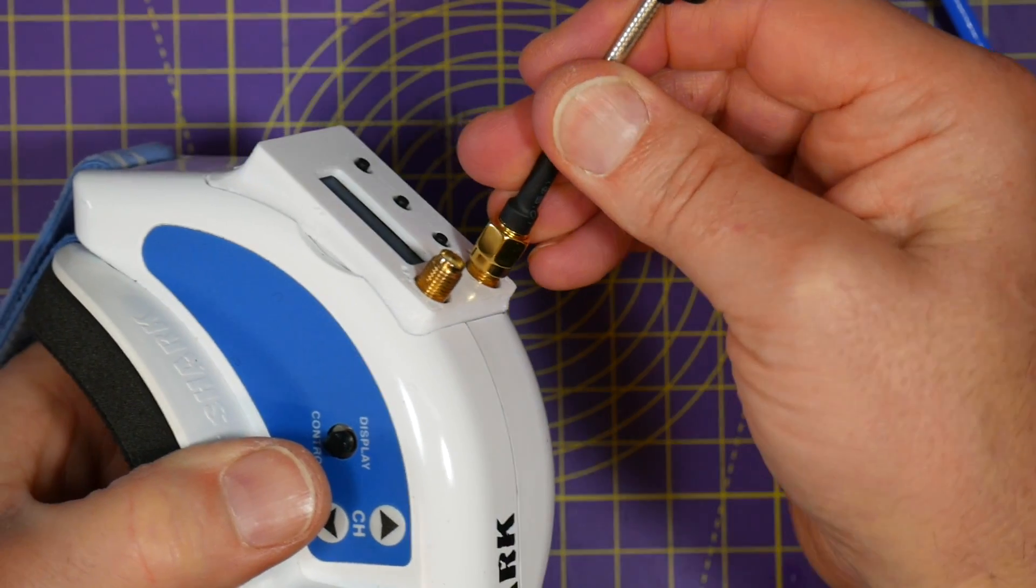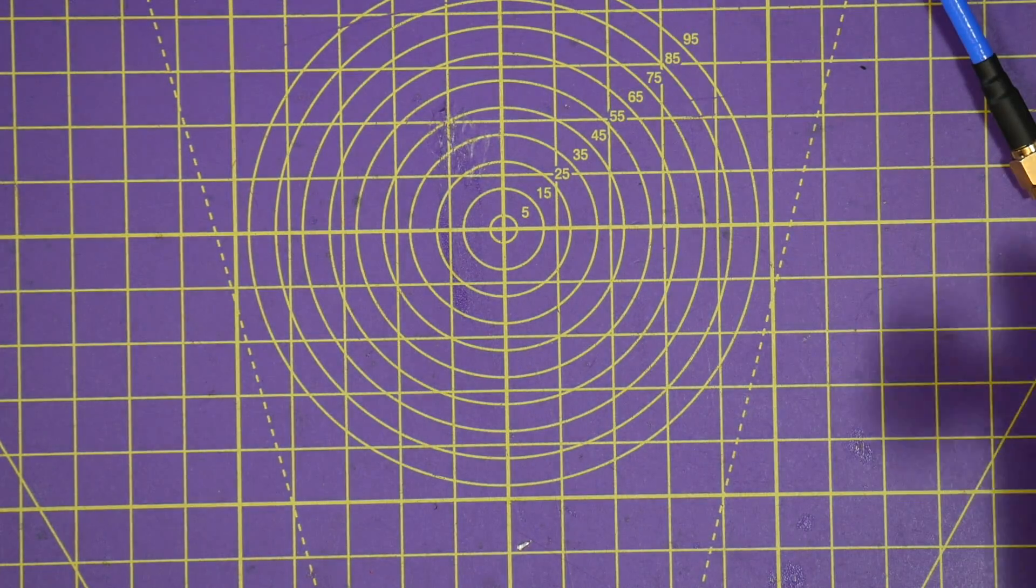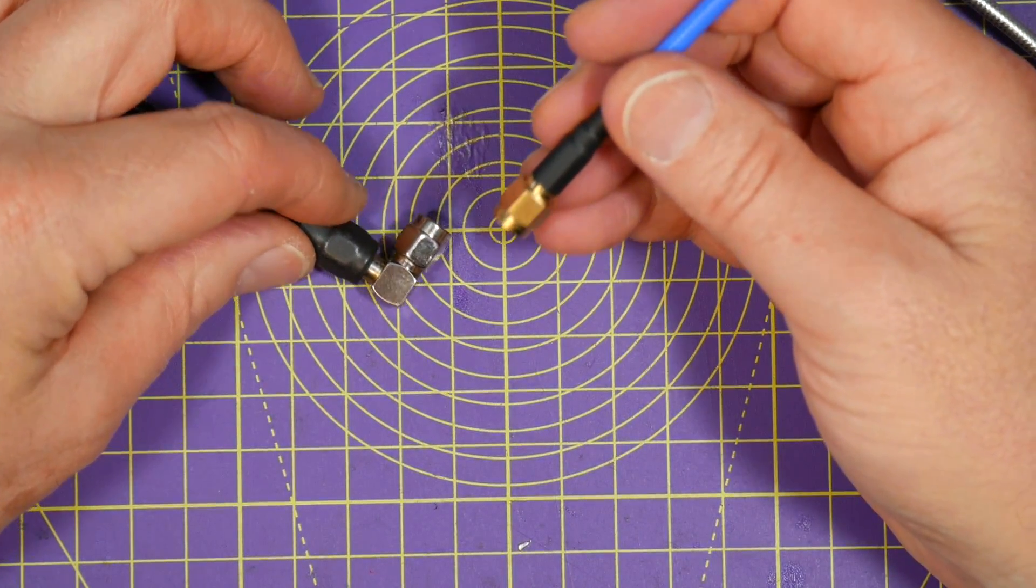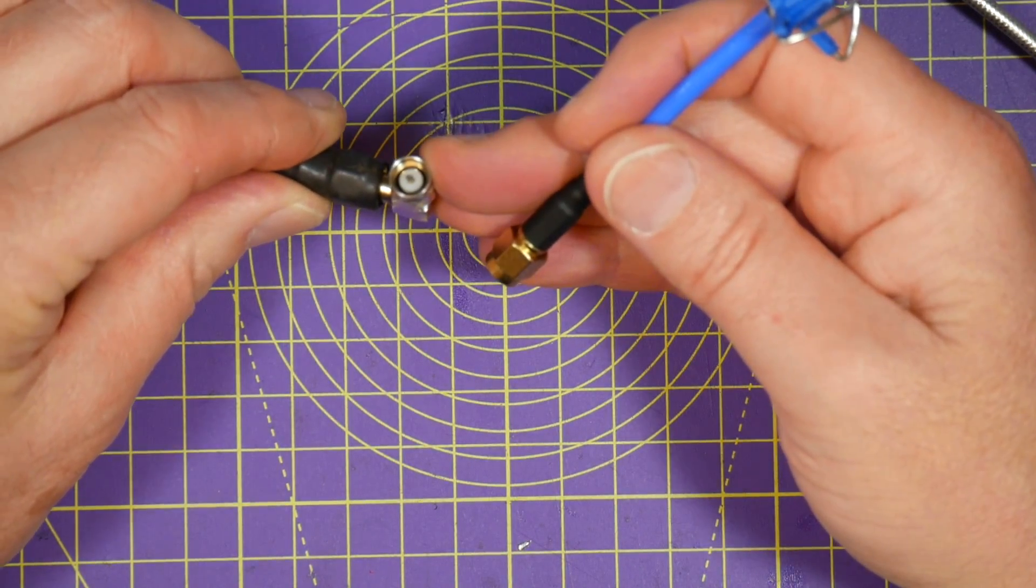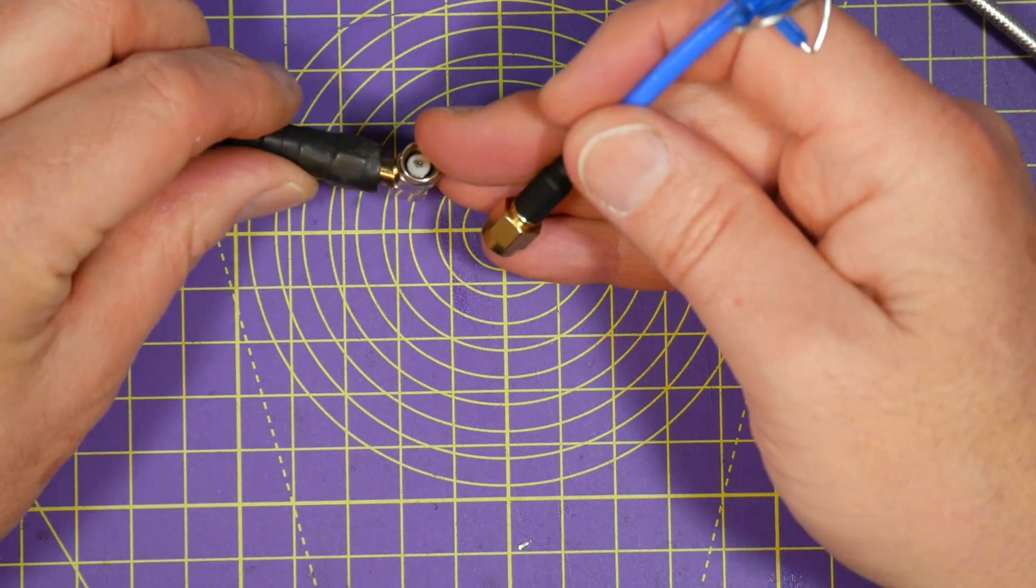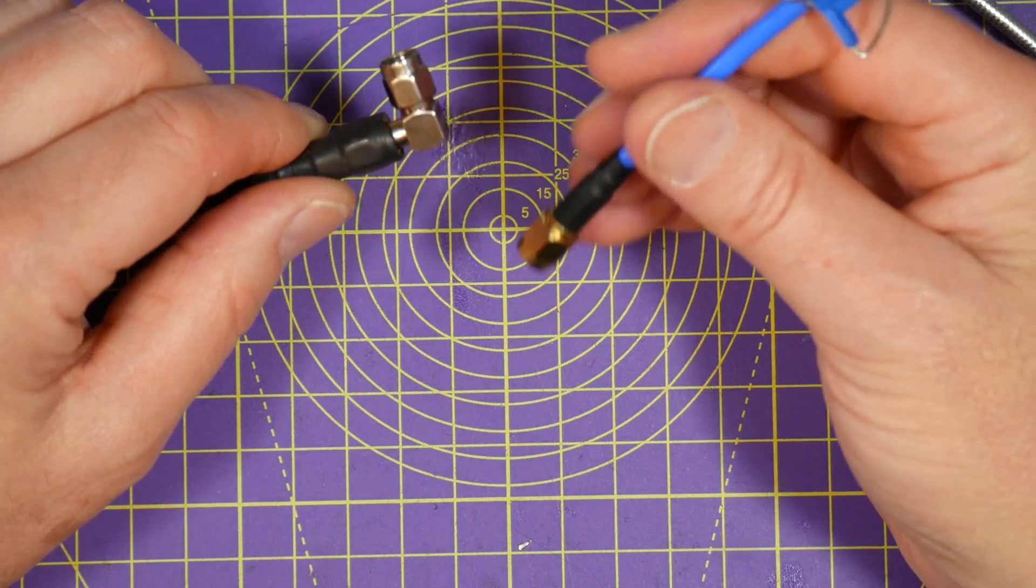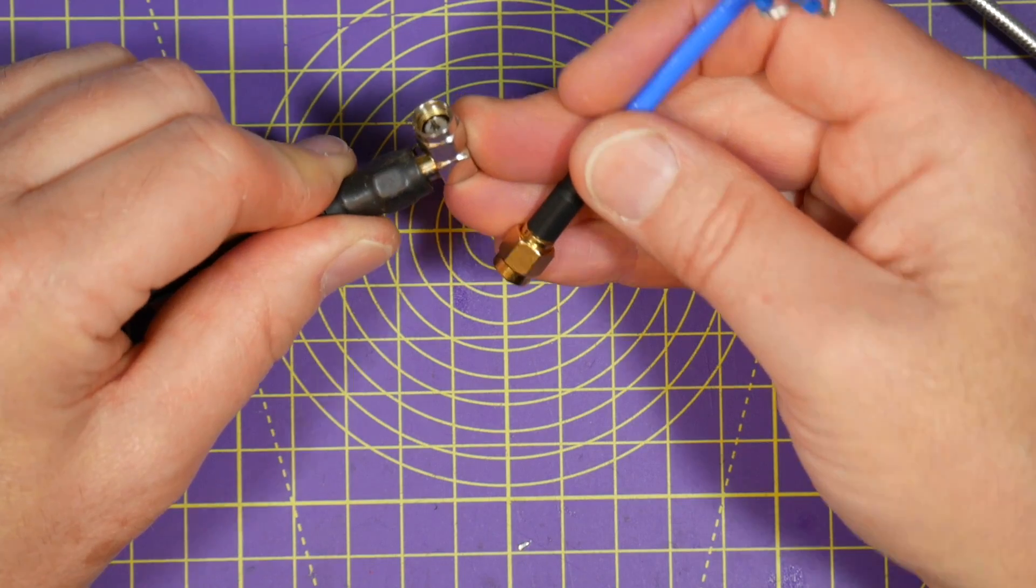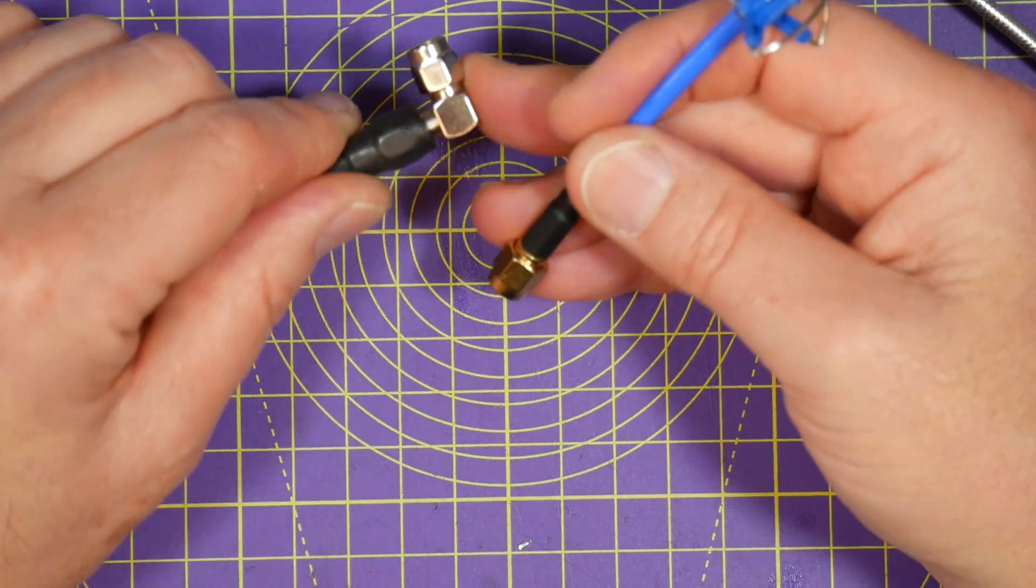So why do RPSMA connectors exist if there's no difference in video quality? Well, the FCC and other regulators in their wisdom wanted a way to stop high-gain antennas being used on consumer Wi-Fi routers and hubs. So manufacturers who wanted to be compliant dreamed up RPSMA, which effectively reversed the polarity of antennas and made them incompatible to stop people using them.